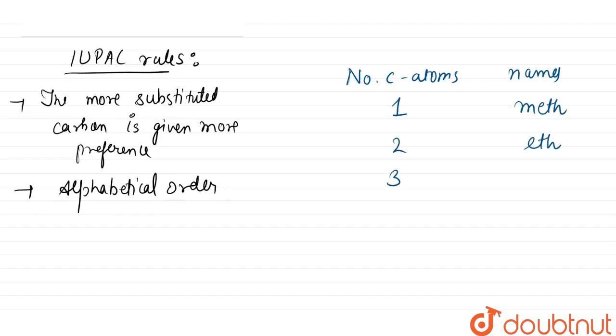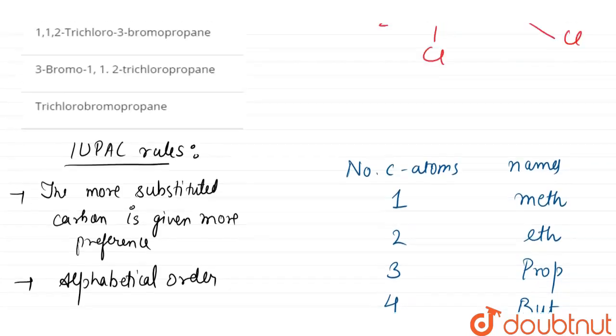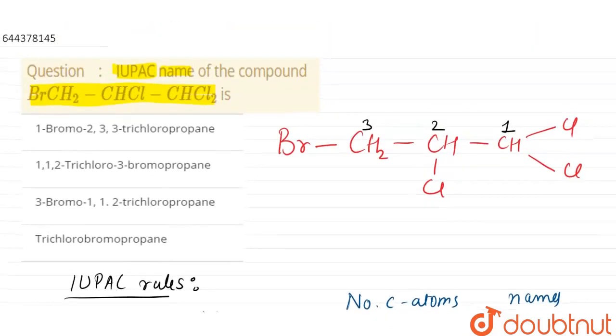For four it is but, for five it is pent, and for six it is hex. Now let us see. Let us write the IUPAC name. At third position we have bromine, so it can be written as three-bromo.